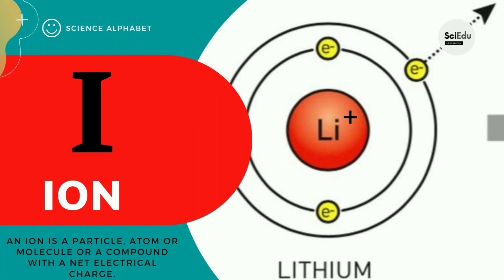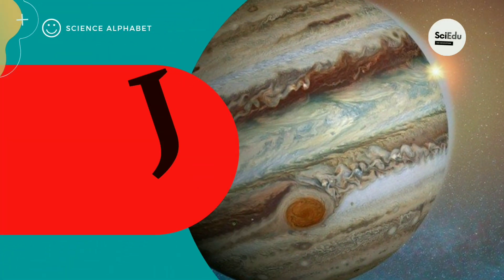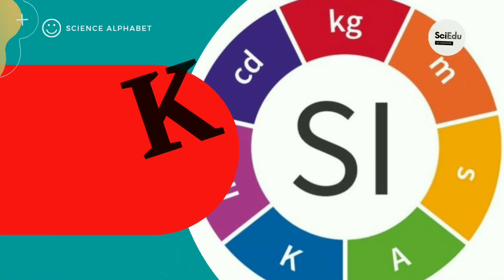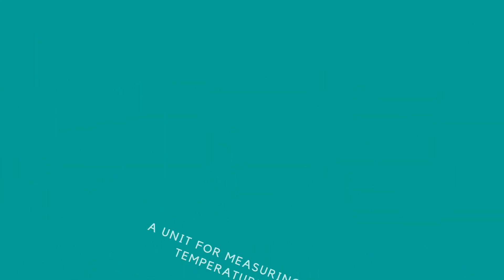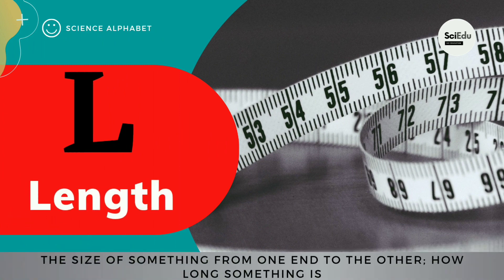I for Iron. J for Jupiter. K for Kelvin. L for Land.